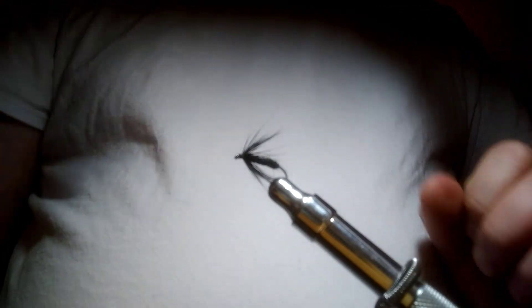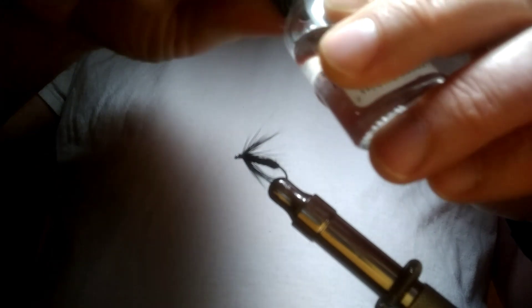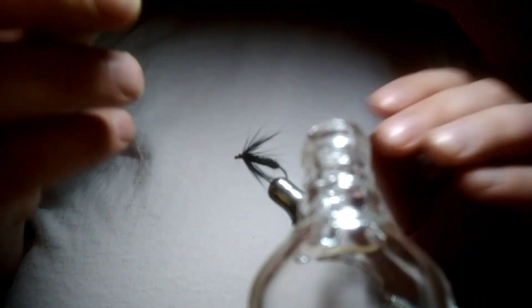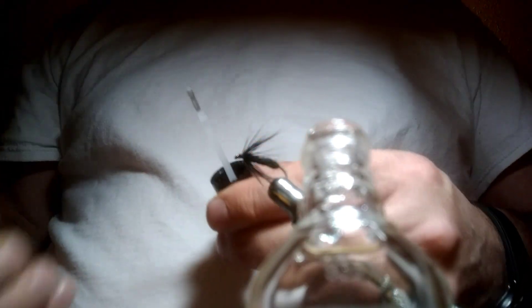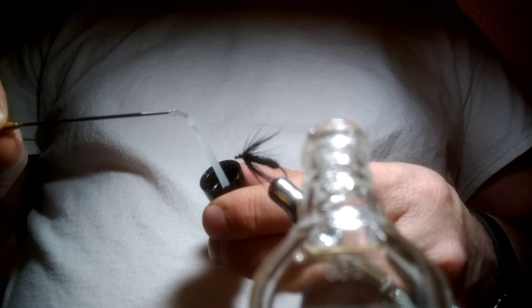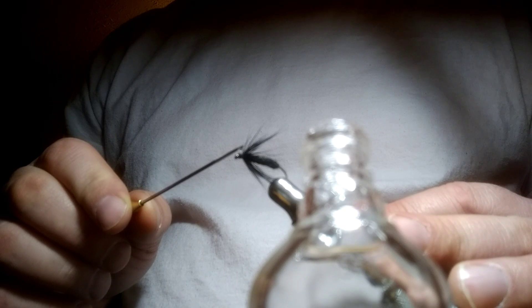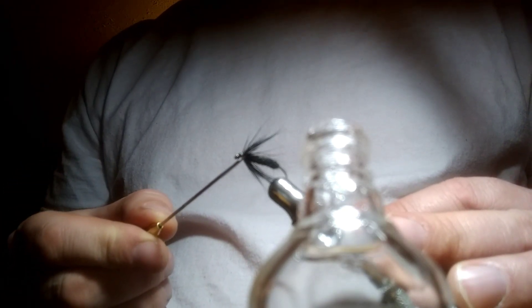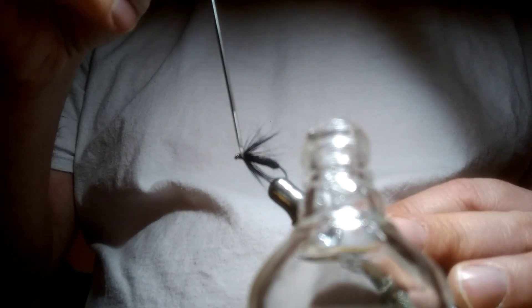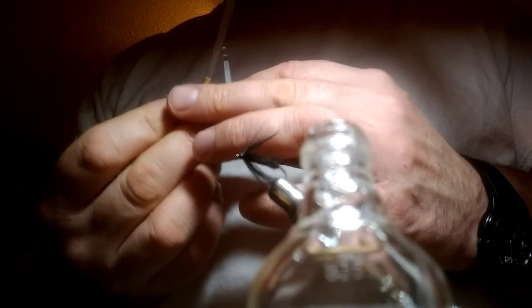And then the last step, take some Sally Hansen or head cement. I can take a tool, get some on the tip of my tool here, and apply it on carefully. Some on top and some underneath. And that's the basic black fly.